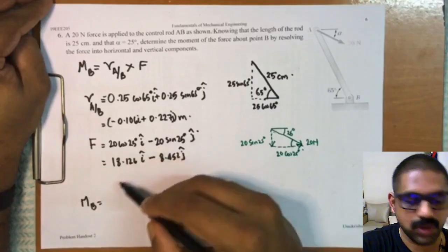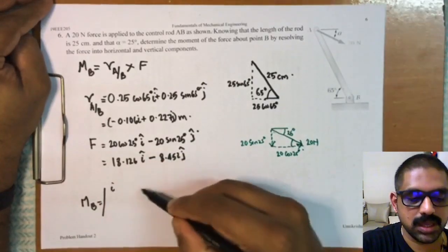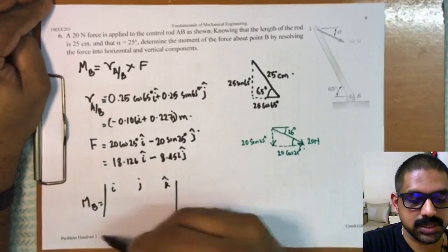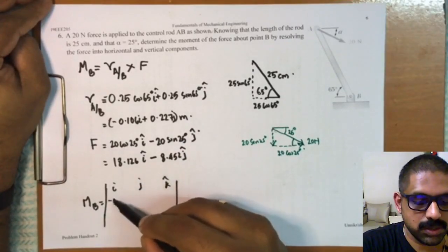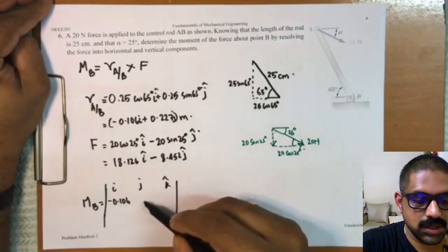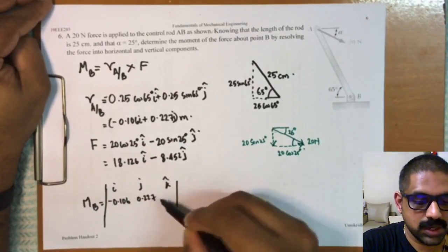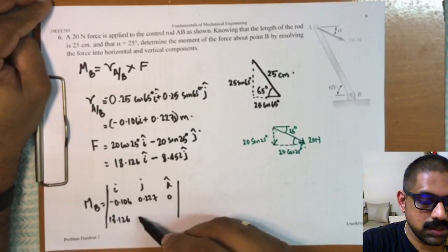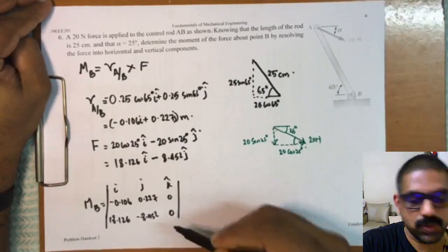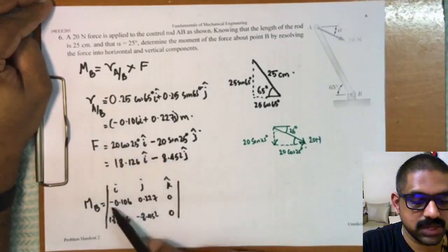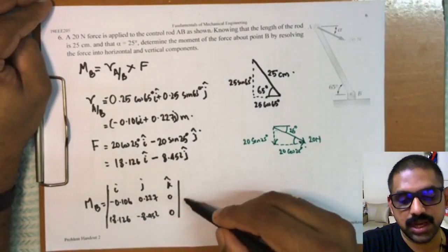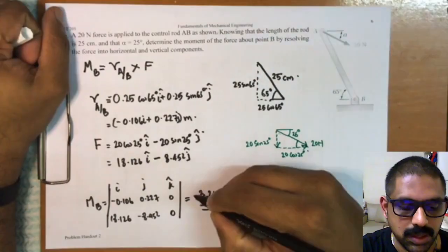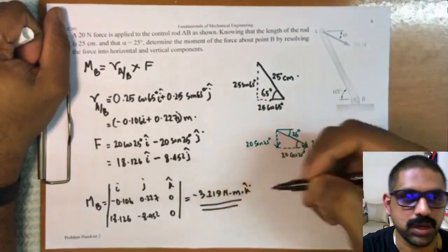...minus 0.106, 0.227, 0, 18.126, minus 8.452, 0. So I have taken the negative signs also here, because if I do not take them, I will end up having a wrong answer. And the answer will turn out to be minus 3.219 newton meter k cap.